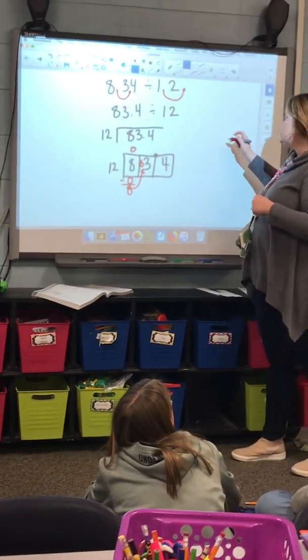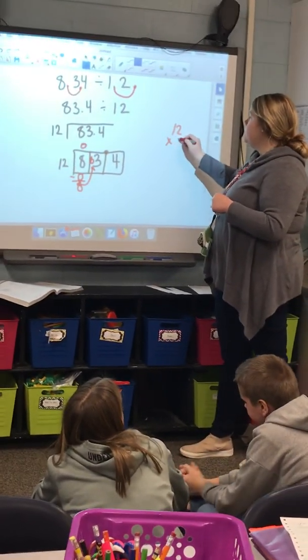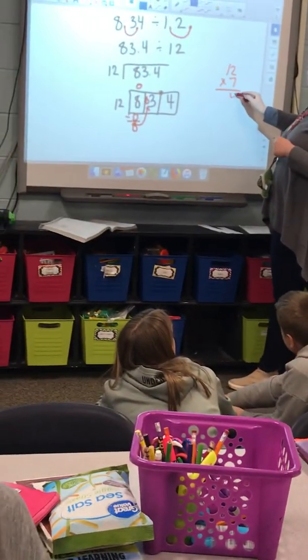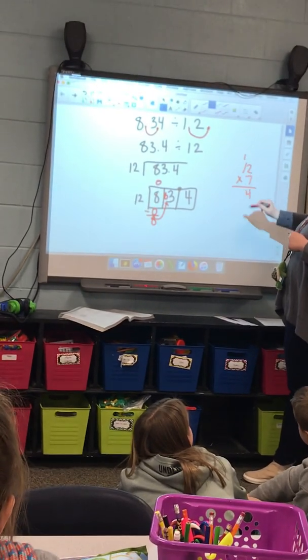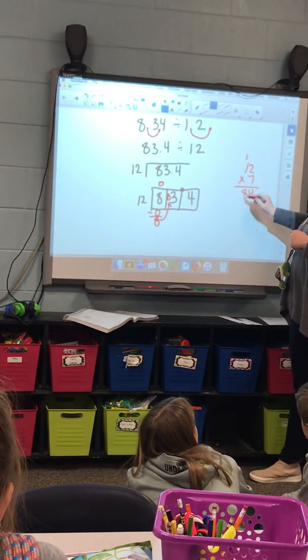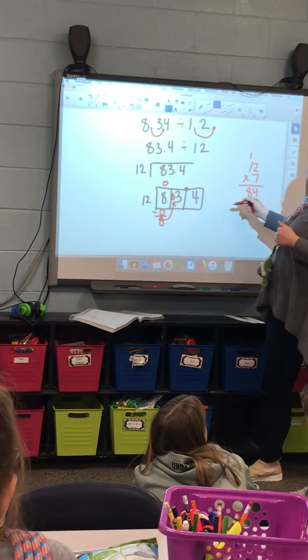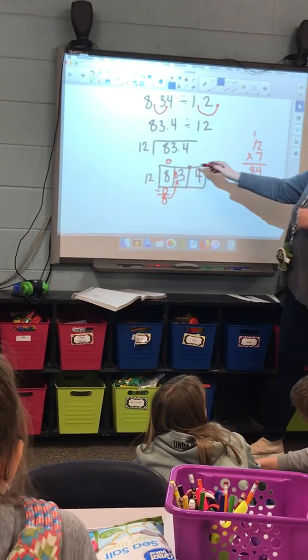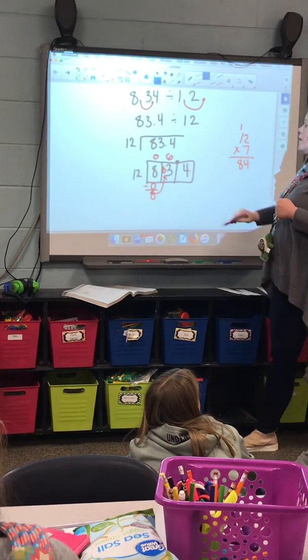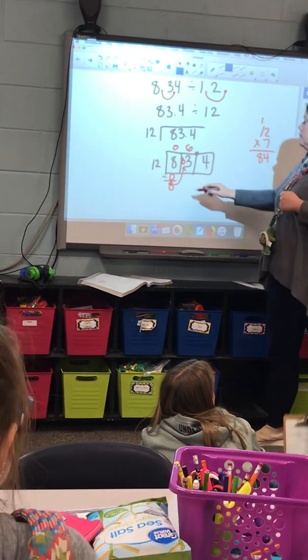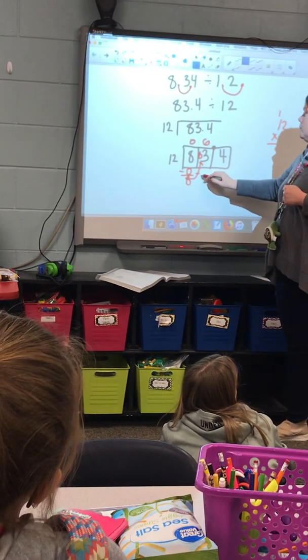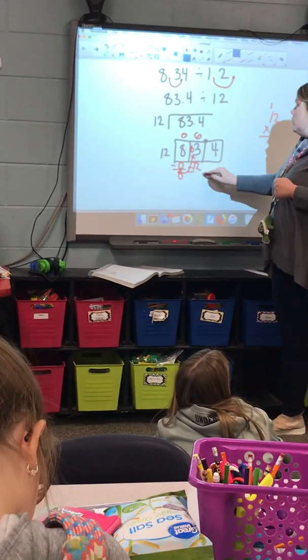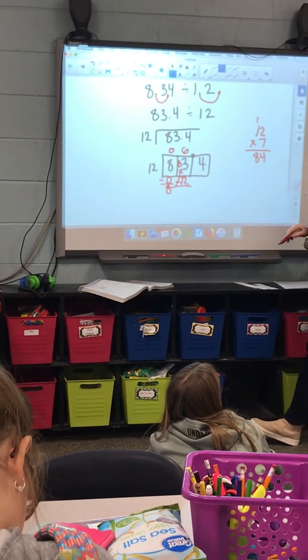Want to try twelve times seven? Well, let's test it. Seven times two is? Seven times one is? Plus one. Oh, great. Oh, it won't work. Will it? It's one over. So, we automatically know that it's six. And what is twelve times six? Seventy-two.